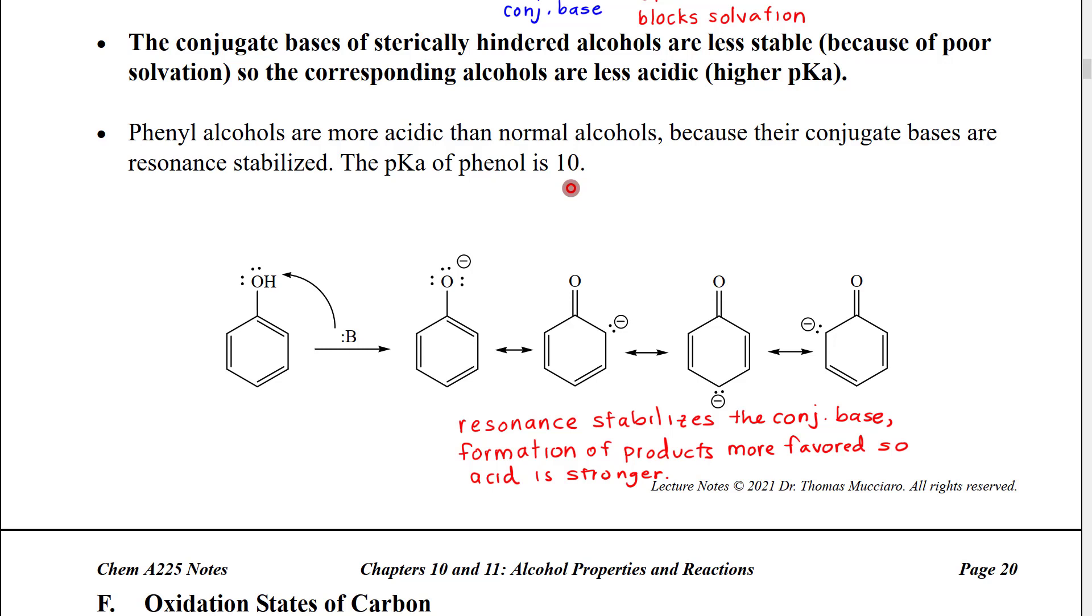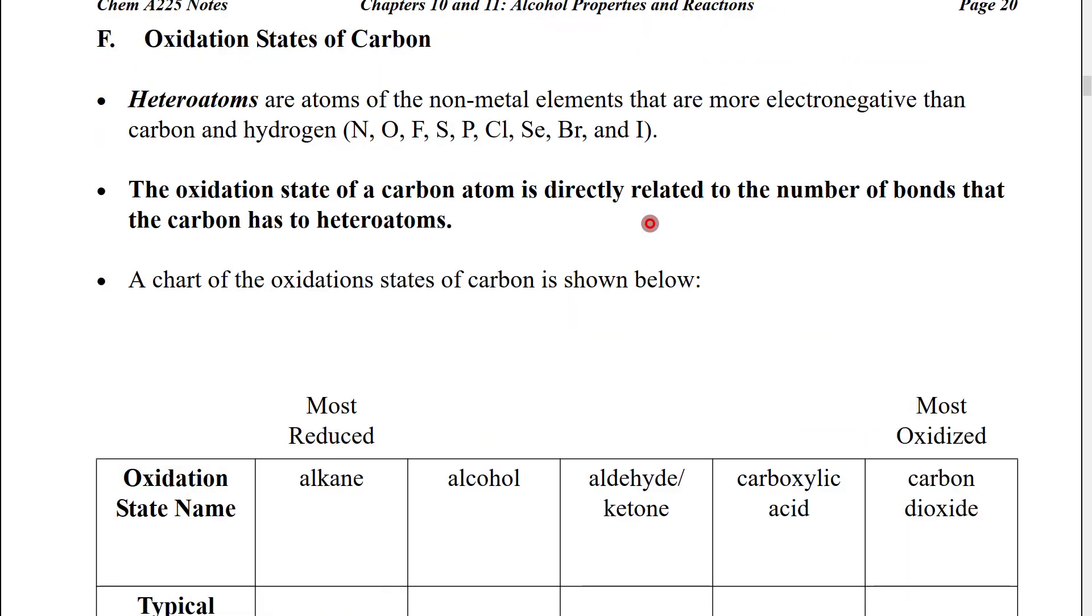The pKa of phenol is 10, which means it's five orders of magnitude stronger even than methanol. We're next going to look at the oxidation states of carbon. Now, we can use regular oxidation state calculations to calculate the specific oxidation state of carbons. However, we generally don't do that on a daily basis.